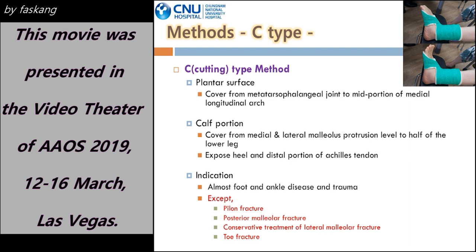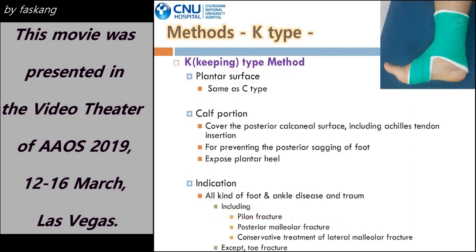Except for those cases, C-type can be applied to most other foot and ankle diseases and trauma patients. K-type was applied to patients including lateral and posterior malleolar fracture, and lateral malleolar fracture undergoing conservative treatment. The bottom surface fixation is the same as C-type, but the lower leg part is wrapped from the internal-external protuberance just inferior of the ankle joint, and from the posterior of the calcaneus to the middle one-third to half of the lower leg, providing additional stability to the posterior calcaneus and Achilles tendon attachment part.